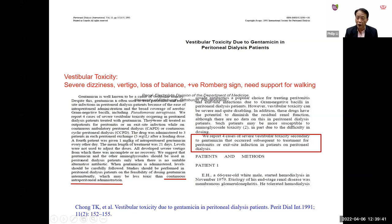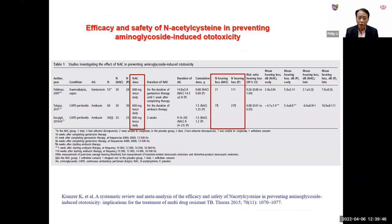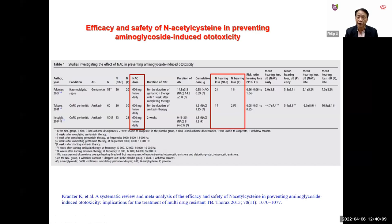A meta-analysis of studies using N-acetylcysteine 600 mg twice daily showed reduction in aminoglycoside-induced hearing loss. This supports the new recommendation to use N-acetylcysteine when aminoglycosides are prescribed, to reduce ototoxicity. Evidence remains insufficient to recommend whether APD patients should be temporarily switched to CAPD during peritonitis treatment — this recommendation is ungraded.